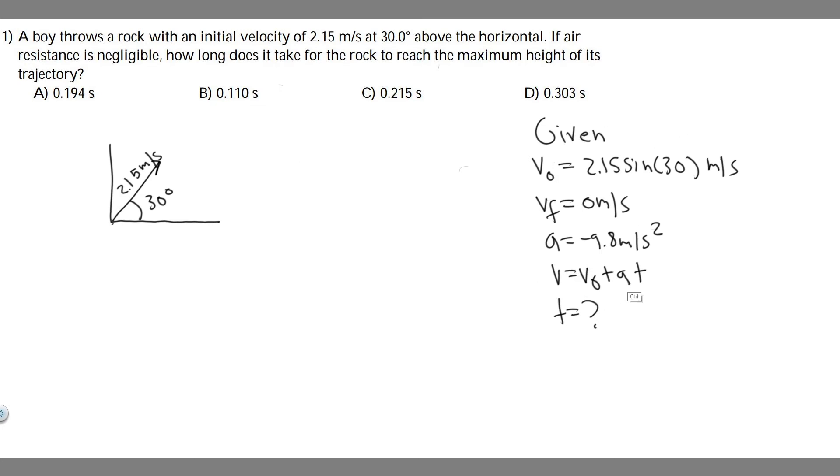Now we have v, v₀, and a, and we can solve for t. Let's rewrite the equation: v = v₀ + at. v is zero because that's when it reaches its maximum height. The initial velocity in the y is 1.075. Then it's plus a negative number, so minus 9.8 times t.